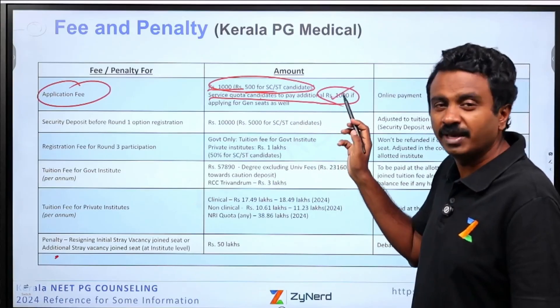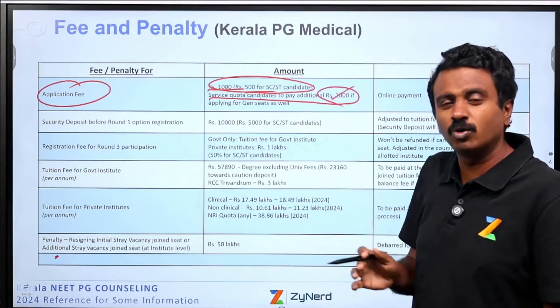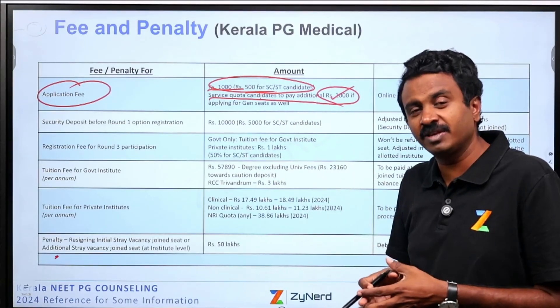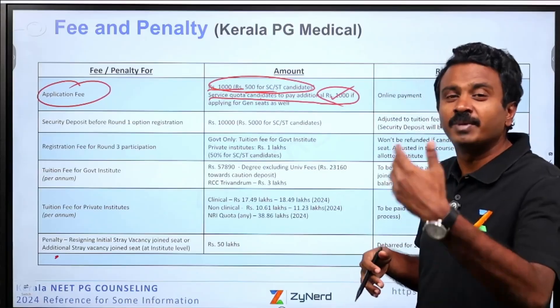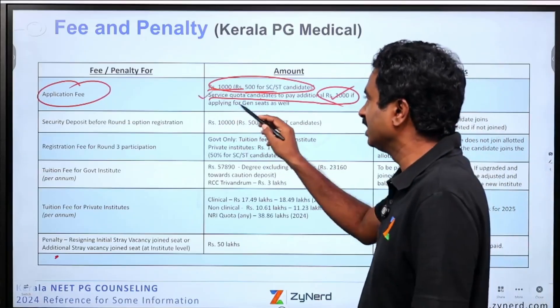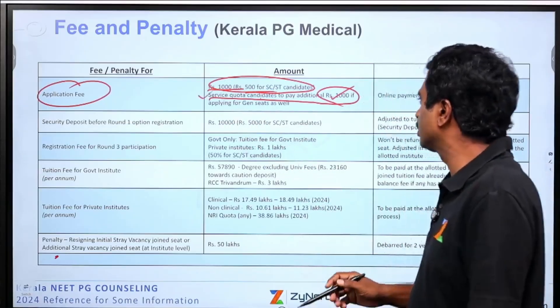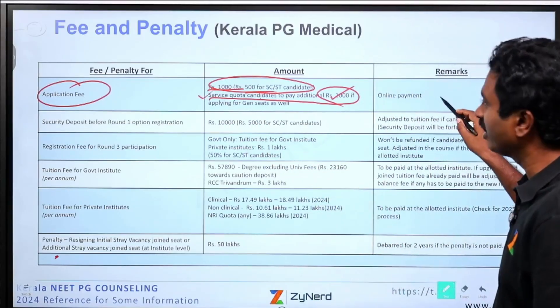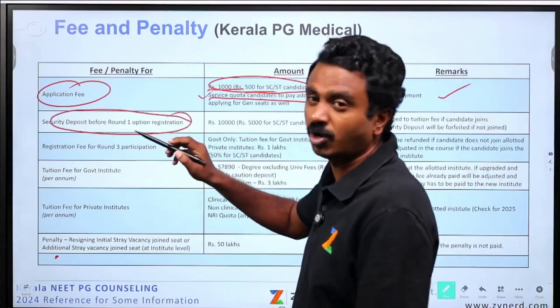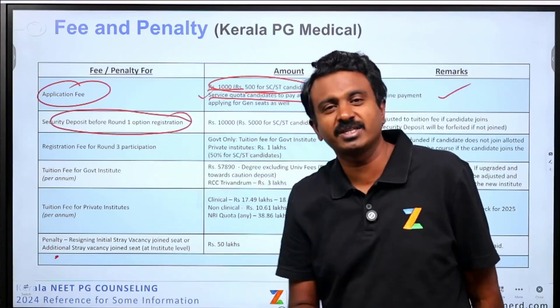If they are applying for general quota and not service quota — service quota will give them good seats — but if they want to get into general for some other seat, then they will pay another 1000 rupees. Online payment only. Security deposit is required before round, at the time of option registration.